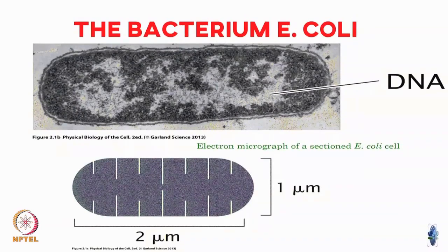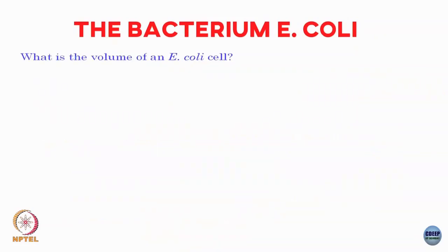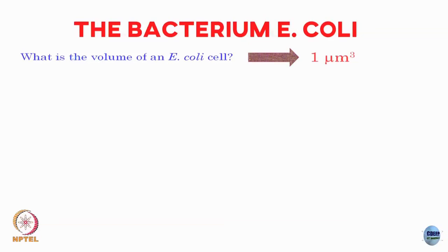The E. coli cell is typically around 1 micron in one direction and 2 microns in the other — this is like the standard ruler for biology. The first thing to ask is: what is the volume of an E. coli cell? I will just say it is roughly 1 micron cubed, since we are talking about order-of-magnitude estimates.